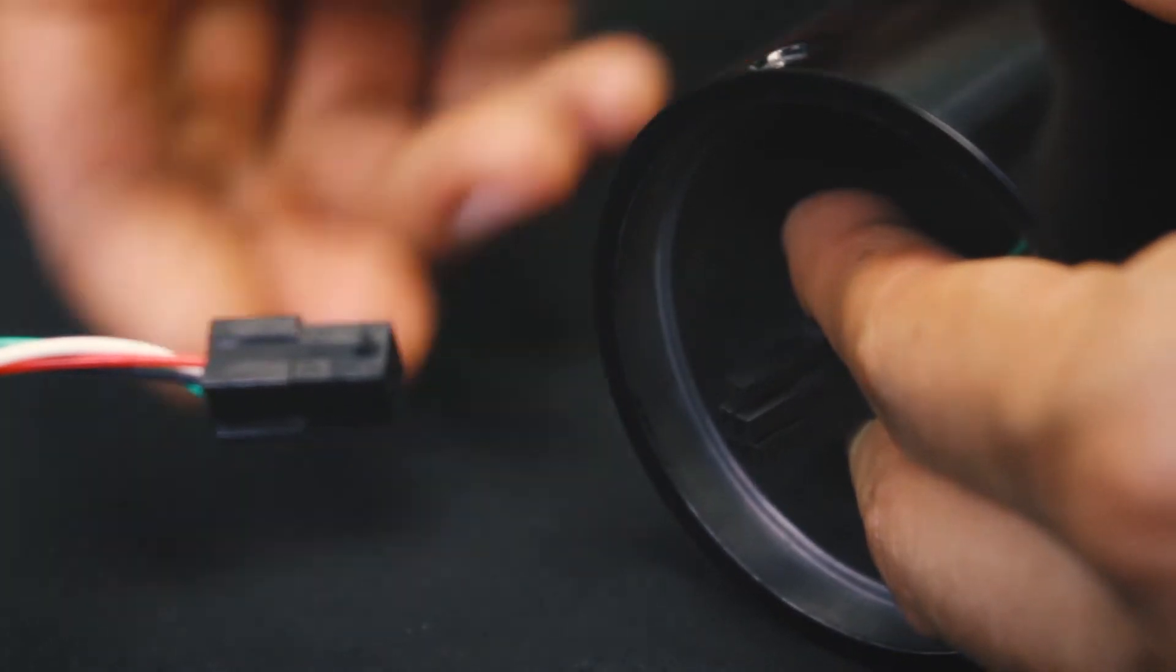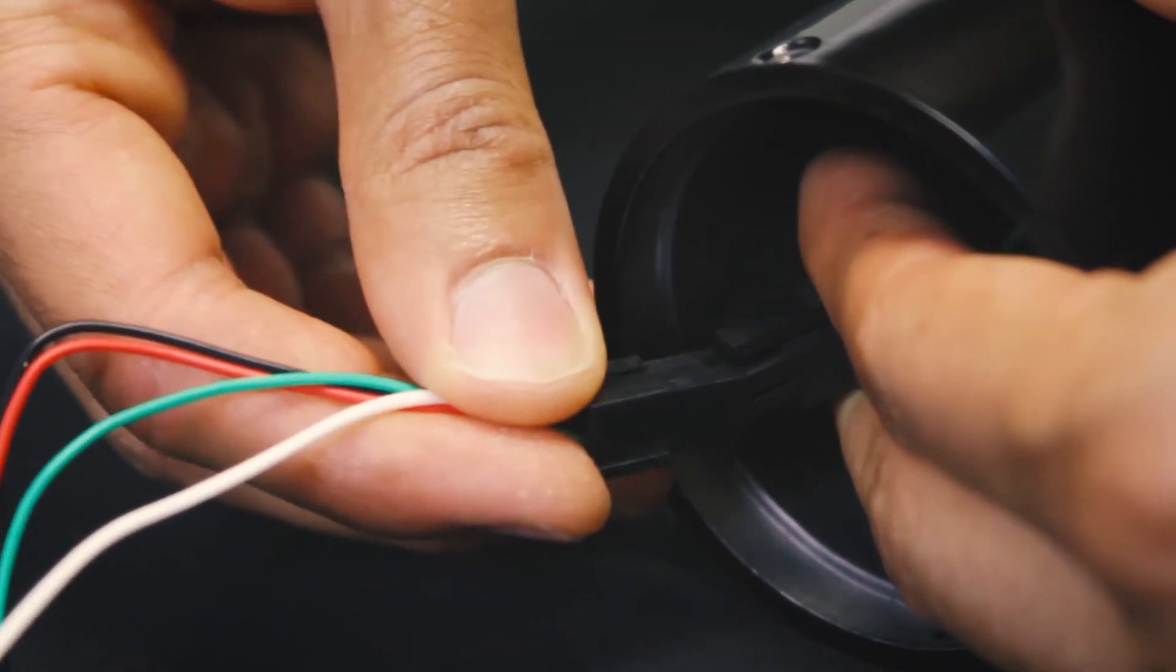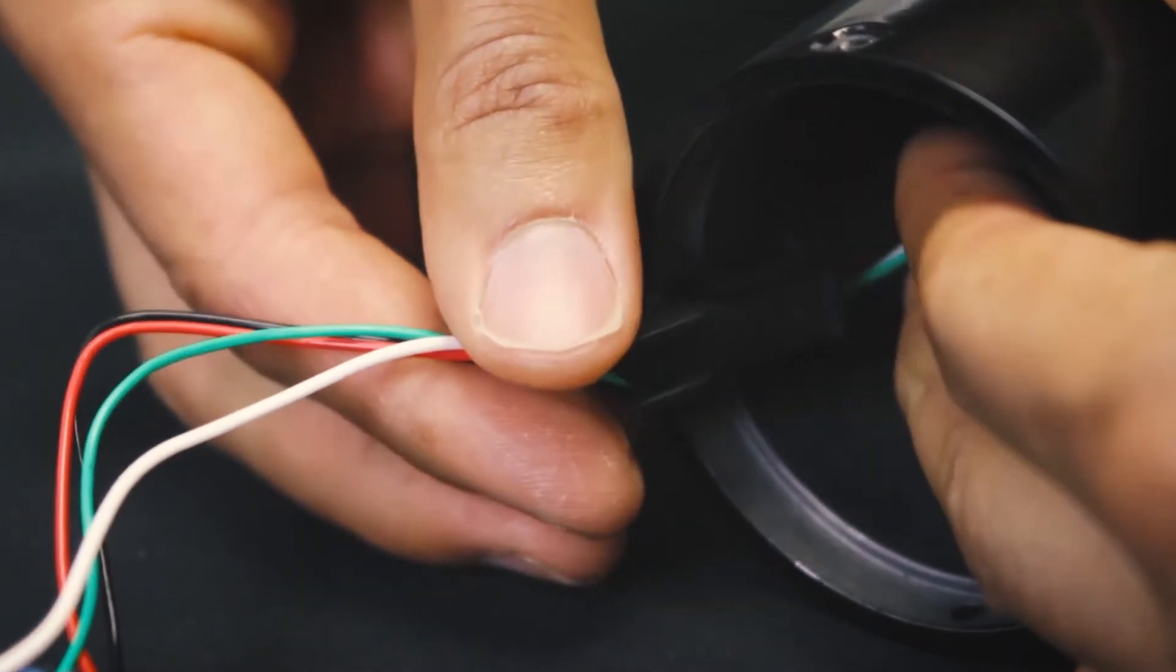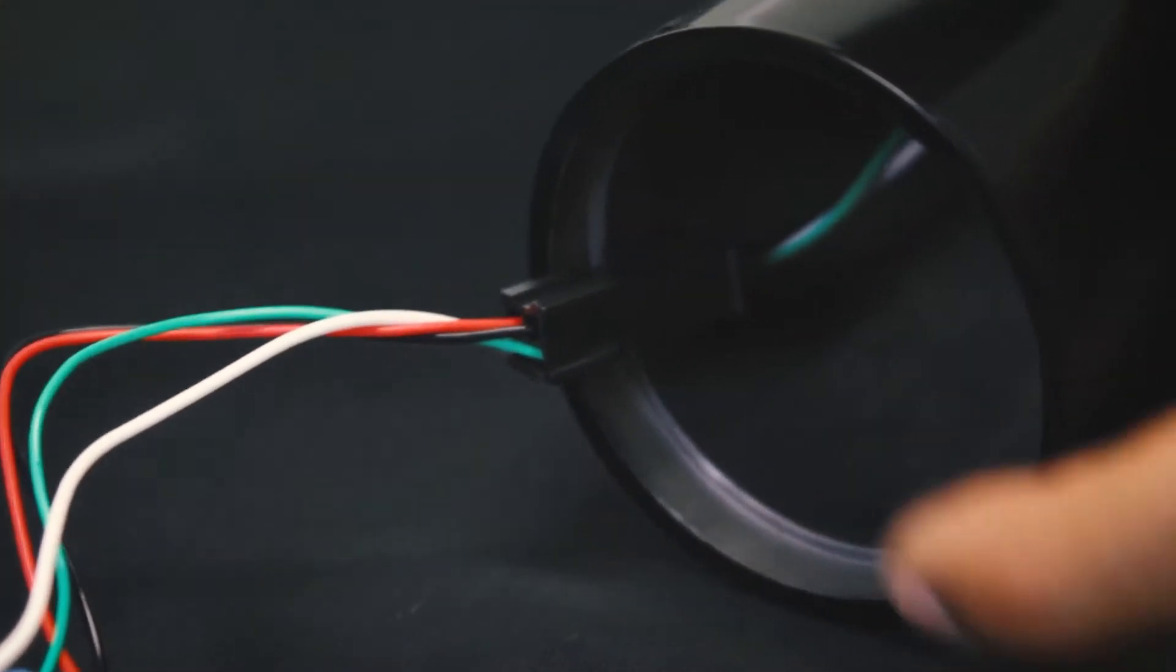Reconnect the motor wire assembly from the motor housing to the motor head. There should only be one configuration for clipping the motor wire assembly together.